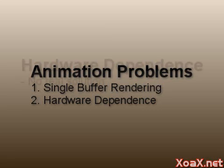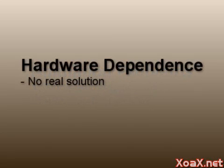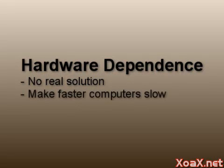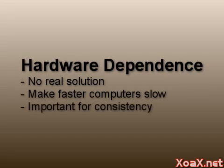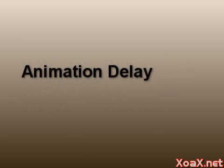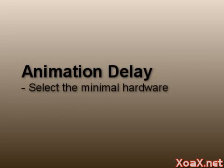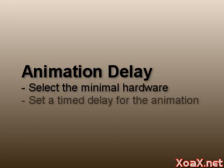While double buffering helps our animation, we still have another problem: the speed depends greatly on our hardware. There's no way to make all computers render at the same speed, however we can slow down the faster computers so that all computers faster than a specified minimum render at the same speed. What we typically do is select a minimum hardware configuration that can render our animation at a reasonable target speed, say about 30 frames per second. Then we set a delay in our main rendering loop to slow all computers down to the targeted frame rate.